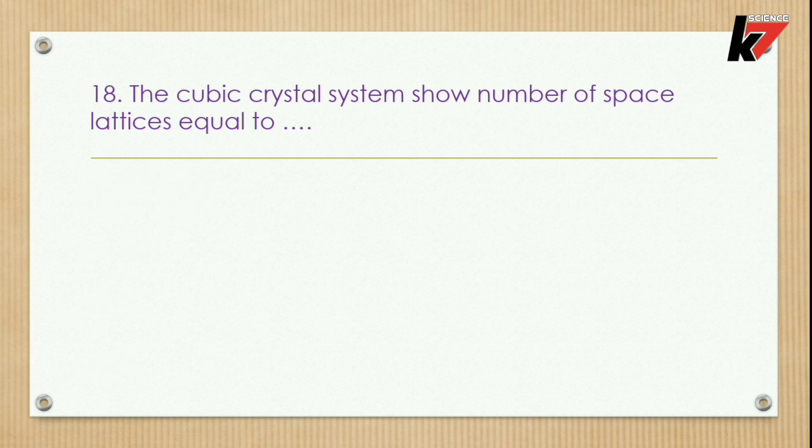Question 18: The cubic crystal system shows a number of space lattices equal to — options: 1, 2, 3, or 4.